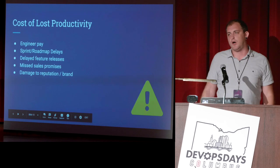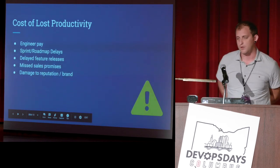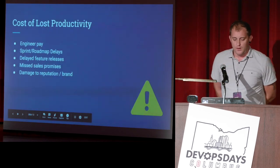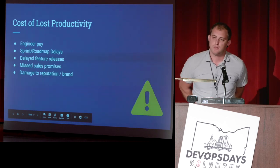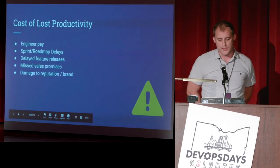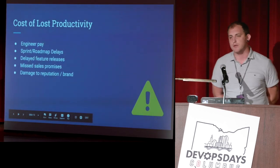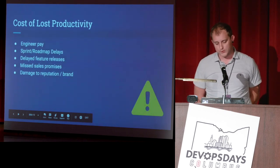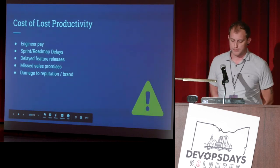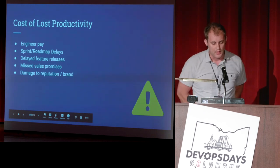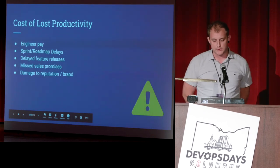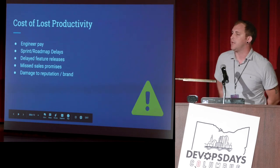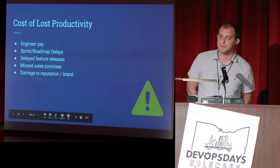What's the cost of lost productivity? You've got the obvious engineer pay. Sprint and roadmap delays come with hidden costs too — delayed feature releases and missed sales promises, which actually damages the brand and causes issues for your sales team.